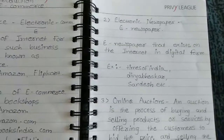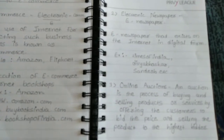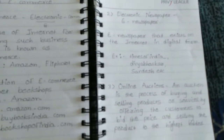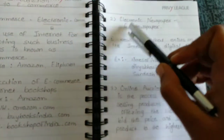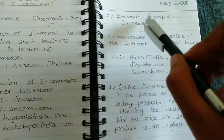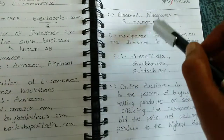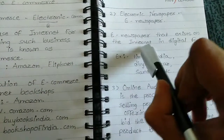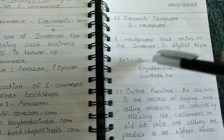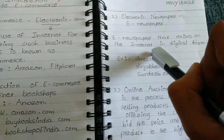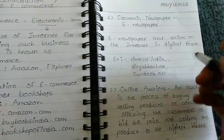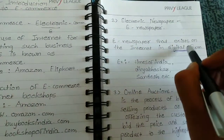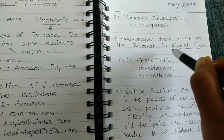The second application is electronic newspaper — e-newspaper. The short name of electronic newspaper is e-newspaper, where E stands for electronic. If you want to read a newspaper online then you can read it by using an e-newspaper, which exists on the internet in digital form because computers use digital waves.